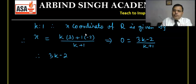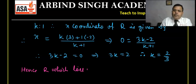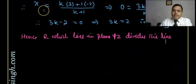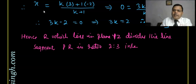Hence R, which lies in the YZ plane, divides the line segment in ratio 2:3 internally. I hope you got it.